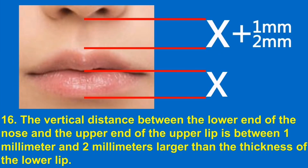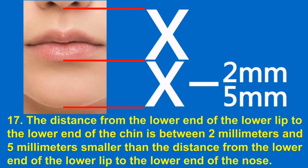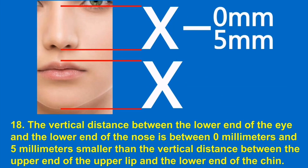16. The vertical distance between the lower end of the nose and the upper end of the upper lip is between 1 millimeter and 2 millimeters larger than the thickness of the lower lip. 17. The distance from the lower end of the lower lip to the lower end of the chin is between 2 millimeters and 5 millimeters smaller than the distance from the lower end of the lower lip to the lower end of the nose. 18. The vertical distance between the lower end of the eye and the lower end of the nose is between 0 mm and 5 mm smaller than the vertical distance between the upper end of the upper lip and the lower end of the chin.